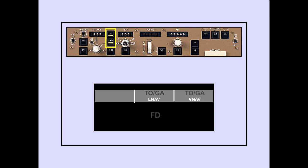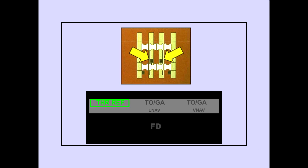LNAV and VNAV are normally selected during pre-flight, allowing automatic engagement after takeoff. LNAV and VNAV relate to the flight management system and will be discussed in the Autoflight LNAV and VNAV module. When ready for takeoff, pushing a TOGA switch enunciates thrust reference on the PFD and the thrust levers advance to the pre-selected thrust. Thrust functions will be discussed in the autothrottle module.